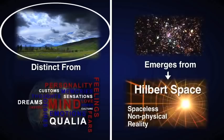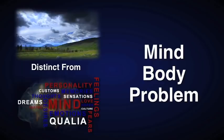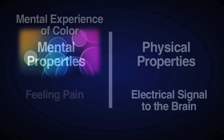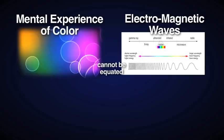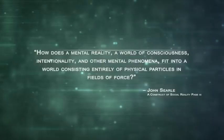No one can demonstrate how a mental phenomena would emerge from a physical substance. A feeling of pain can never be equated to an electrical signal. The mental experience of color cannot be equated to electromagnetic waves which hit receptors in our eyes. There is merely a correlation between the two, but one cannot explain how qualia could ever possibly emerge from this. As John Searle says, How does a mental reality, a world of consciousness, intentionality, and other mental phenomena, fit into a world consisting entirely of physical particles and fields of force?